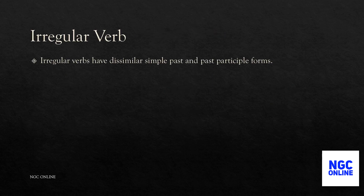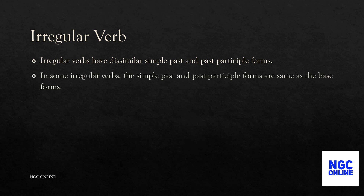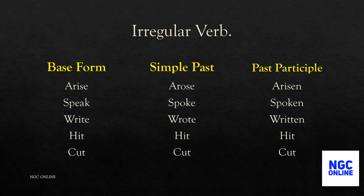Irregular verbs have dissimilar simple past and past participle forms, and in some irregular verbs the simple past and past participle forms are the same as the base form. For example, 'arise' is the base form; its simple past form is 'arose' and the past participle form is 'arisen.'